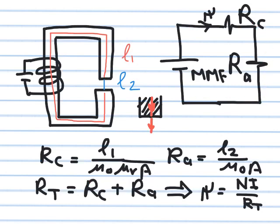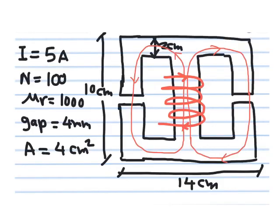Once I find the total reluctance, I can get the flux by applying circuit theory. Psi equals NI divided by the total reluctance (Rₐ + Rc). If I know the current, the number of turns, and the reluctances, I can compute psi — the flux flowing in the magnetic core. You simply establish the analogy with electric circuits: magnetomotive force as voltage, flux as current, and reluctance as resistance.